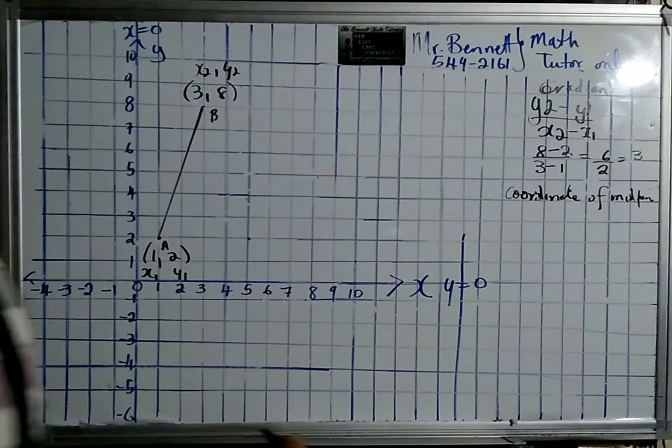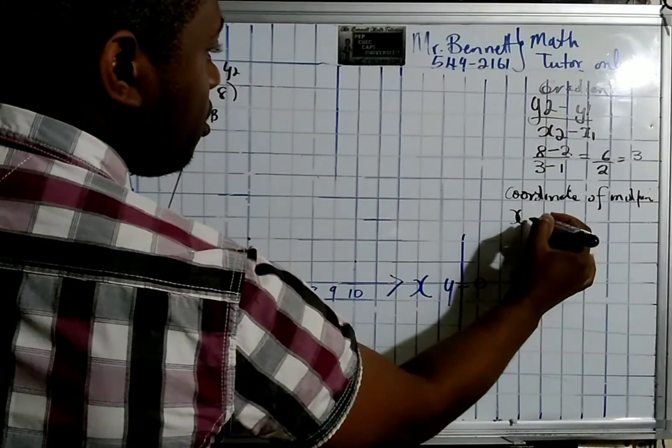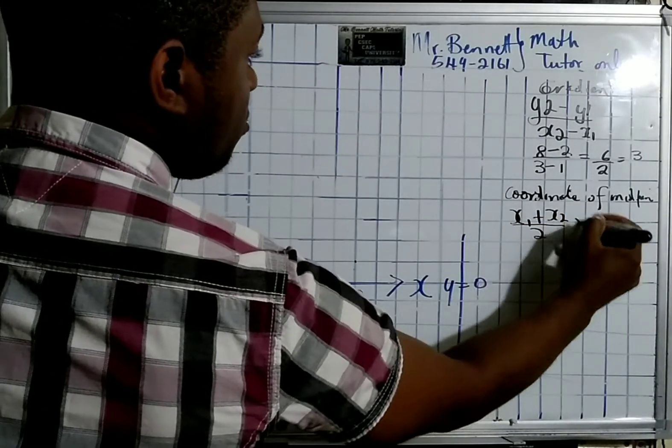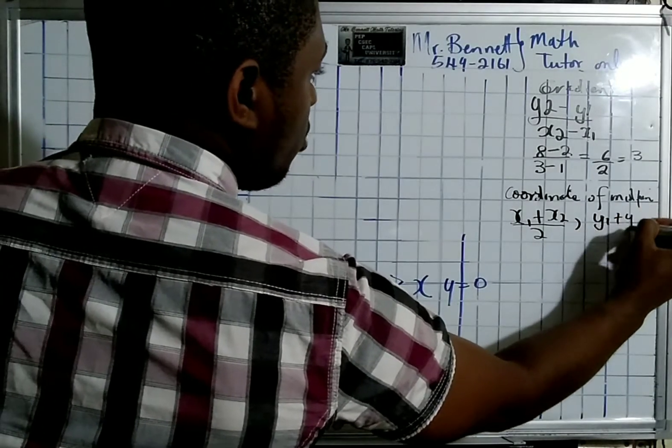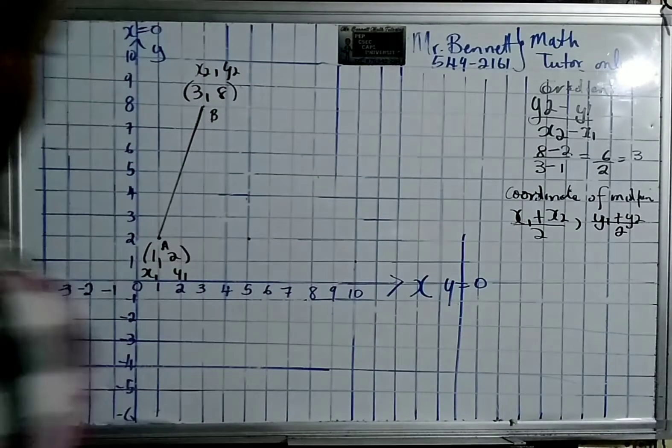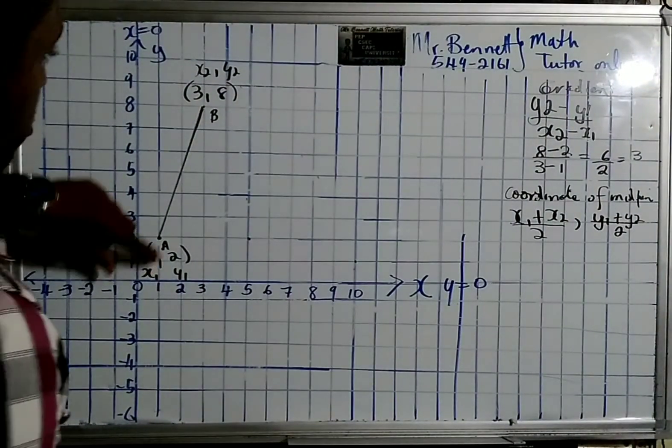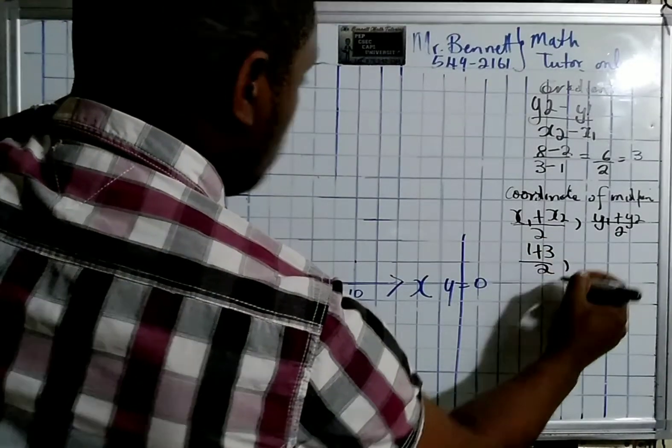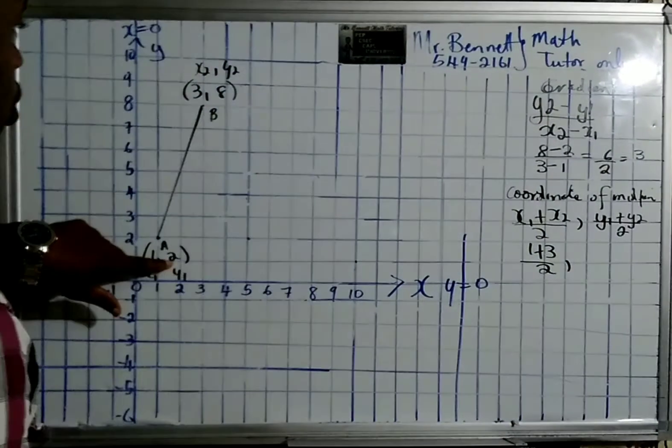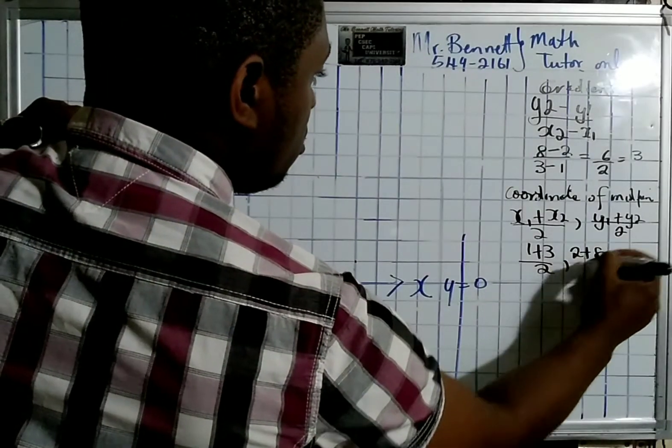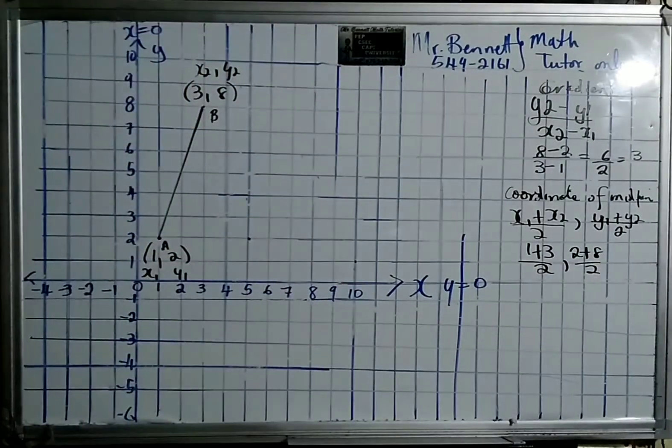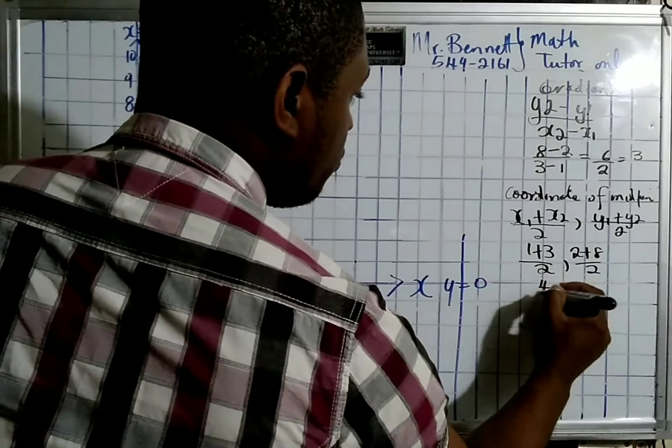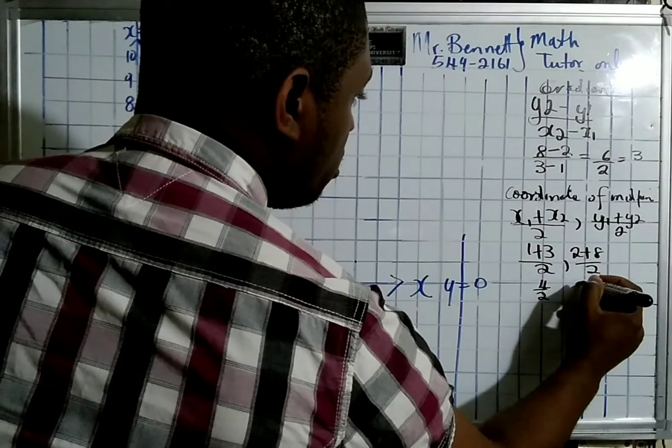It's halfway between the x values, so x1 plus x2 divided by 2. Same thing: y1 plus y2 divided by 2. How simple is this? So x1 was 1 plus 3, that's (1+3)/2, and (2+8)/2. It's 4 over 2 and 10 over 2.